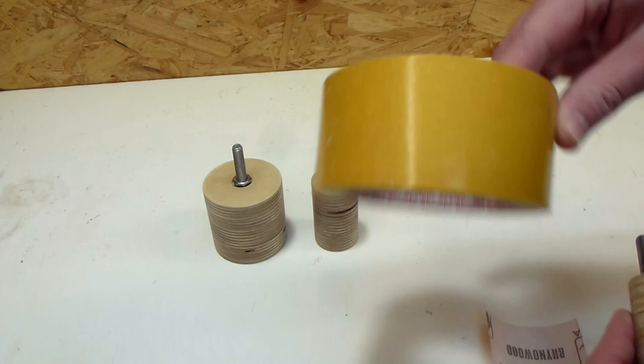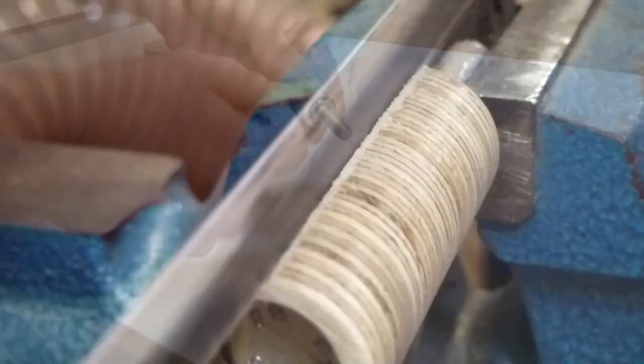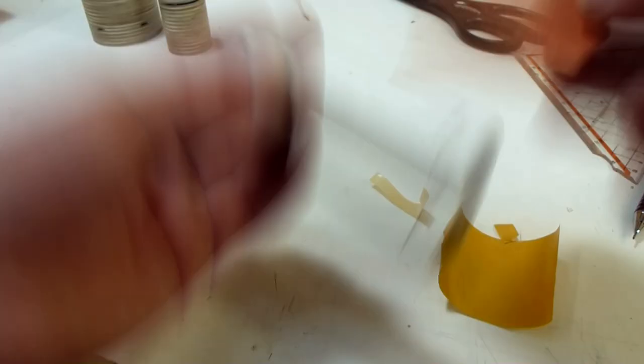But I also had another idea for it. With a saw I cut a slot along the spindle. Then putting on some double sided tape. One edge of the sandpaper goes inside the slot and the rest just gets wrapped around.